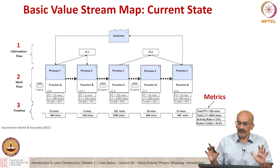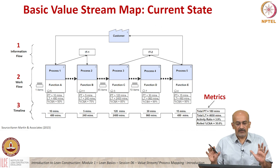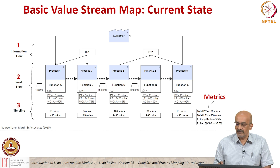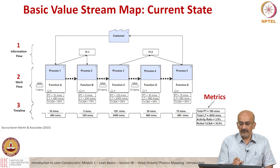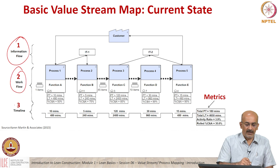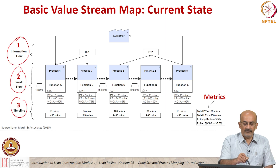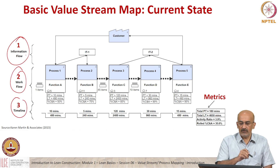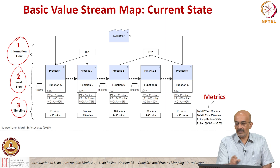So here is a value stream map. I am going to explain what the components of this map are. The map contains three levels: the information flow level, the workflow level, and a timeline. So a value stream map also captures information.